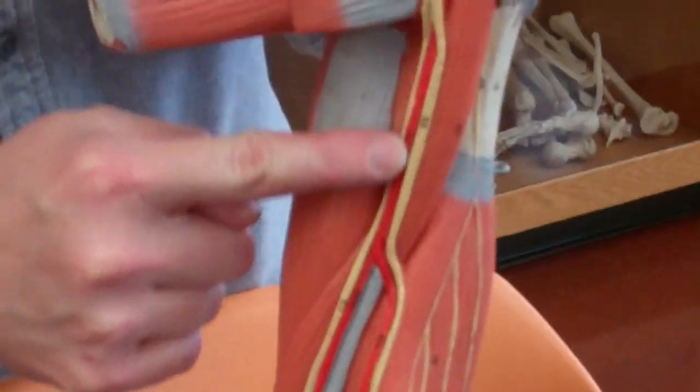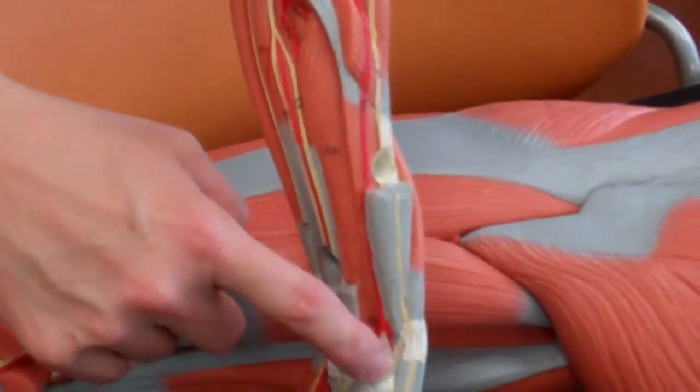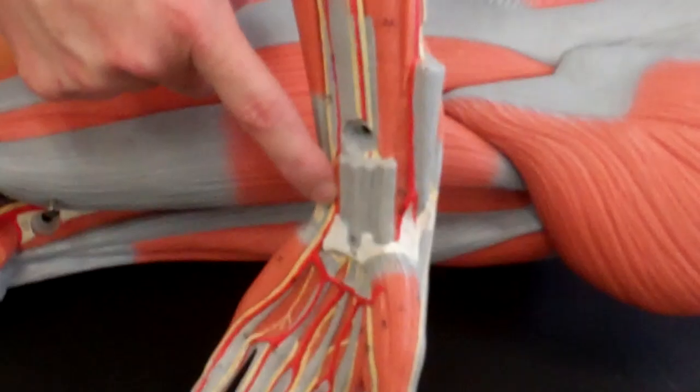Then you have the brachial artery, and then we have the radial artery and we have the ulnar artery.